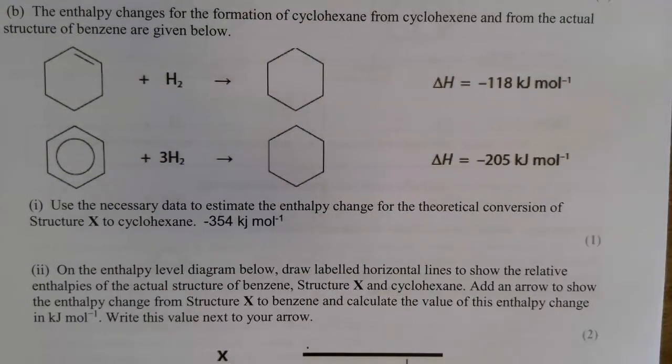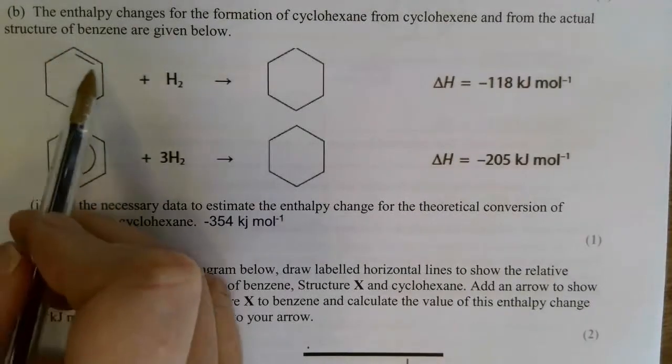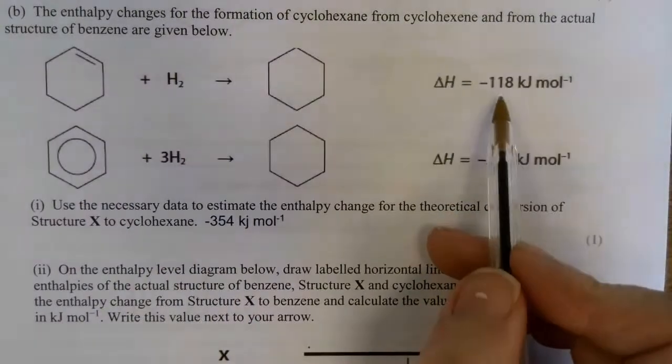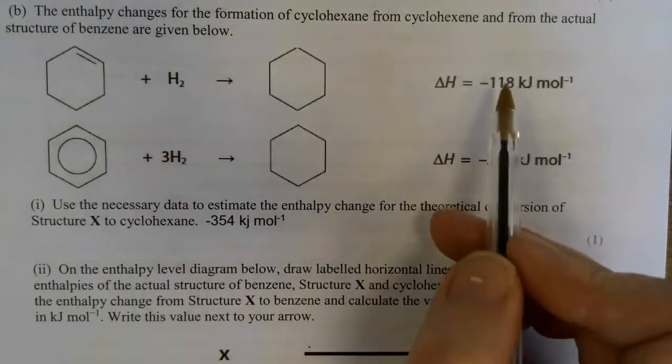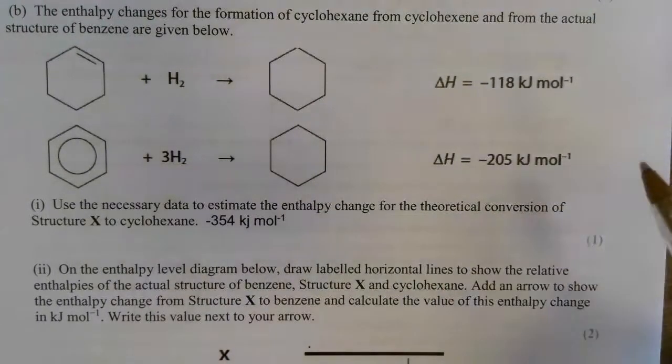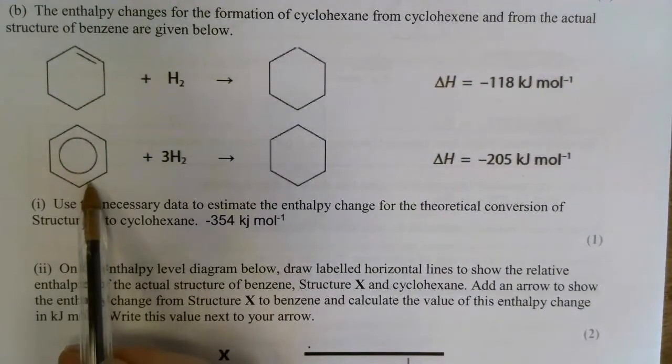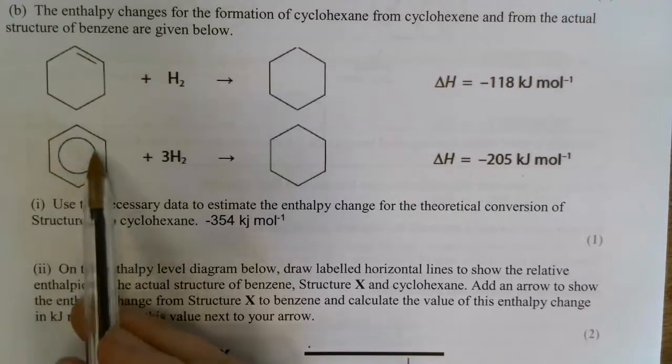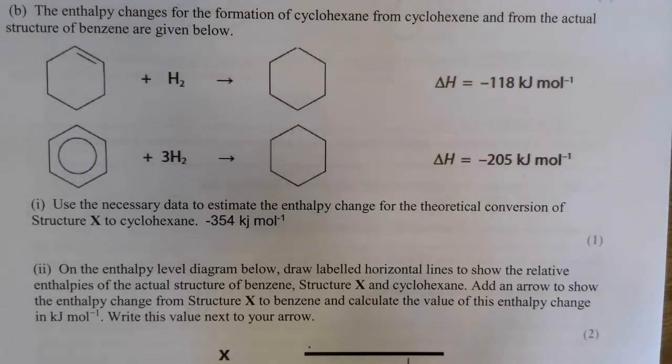So the estimated value for the theoretical conversion of X into cyclohexane would be three times 118, so that'd be minus 354. Now we know it's less than that. It releases less energy because we've actually got this delocalized ring of electrons. Remember these six p electrons are delocalized and it takes energy to disrupt that delocalization.